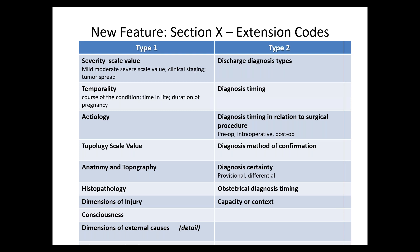There's a rich base in terms of extension codes. The type 1s include severity scale value, mild-moderate-severe scale, tumor spread scale, clinical staging — a lot of depth and detail. Temporality covers how long the person has had the condition and at what point in their life they developed it. Duration of pregnancy, etiology — all of these categories have an exquisite amount of detail under them. I just wanted to give you some background on what is now included in ICD-11.